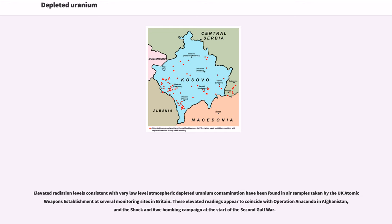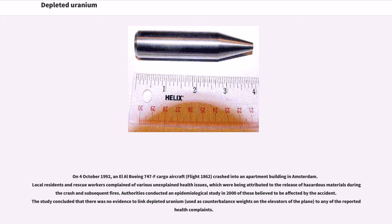On October 4, 1992, an El Al Boeing 747F cargo aircraft — Flight 1862 — crashed into an apartment building in Amsterdam. Local residents and rescue workers complained of various unexplained health issues, attributed to the release of hazardous materials during the crash and subsequent fires. Authorities conducted an epidemiological study in 2000 of those believed to be affected by the accident. The study concluded that there was no evidence to link depleted uranium, used as counterbalance weights on the elevators of the plane, to any of the reported health complaints.